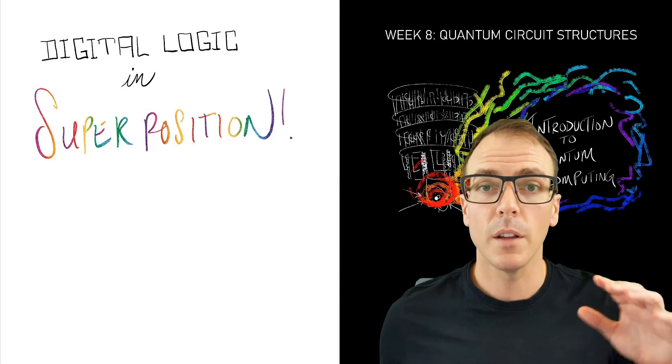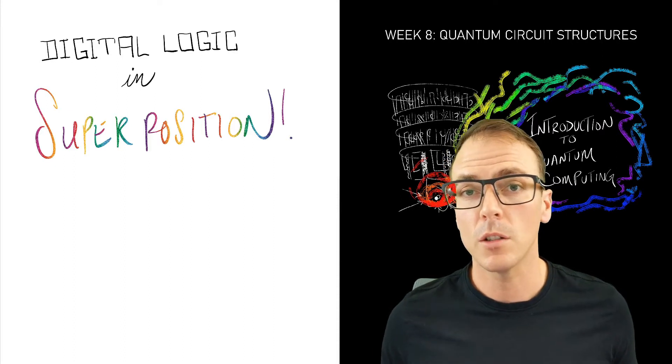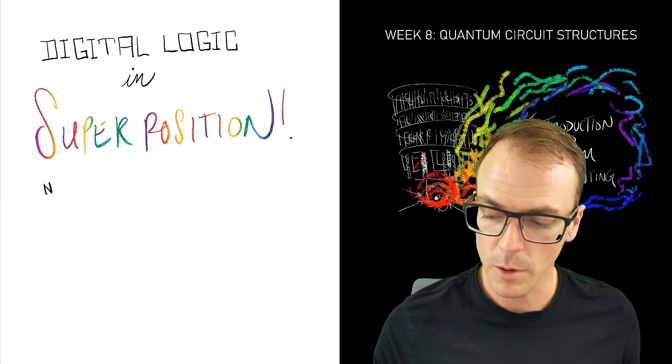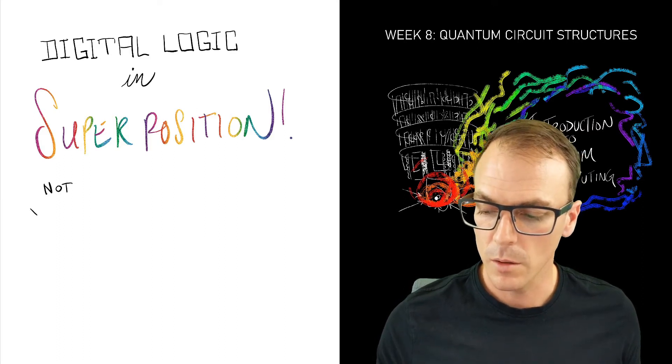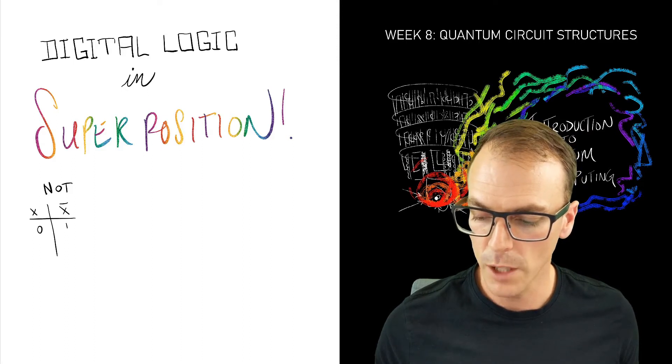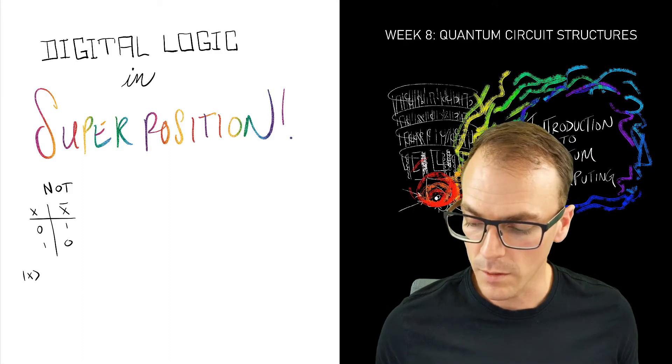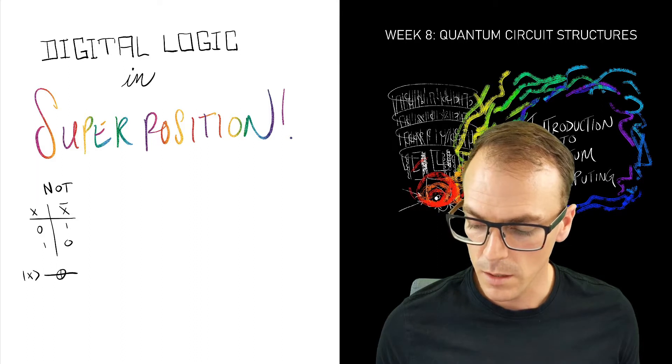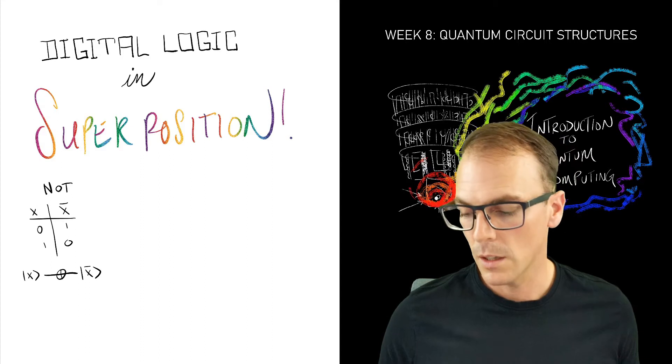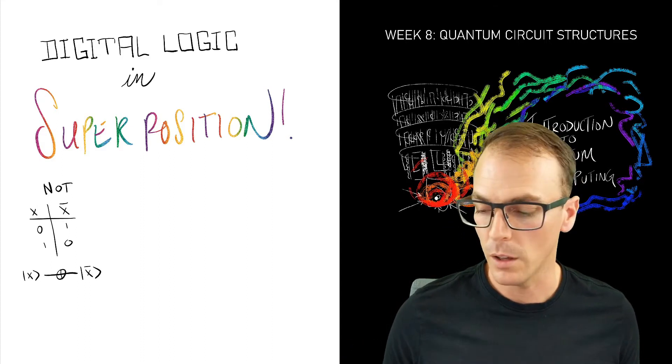The first primitive that you'll see in quantum computation is simply the ability to do digital logic on basis states. So we remember that for a single qubit we had the NOT operation which flipped the bits, and that was an X gate or the other way to draw it was with this OR symbol. That takes an input basis state and flips the label on it.